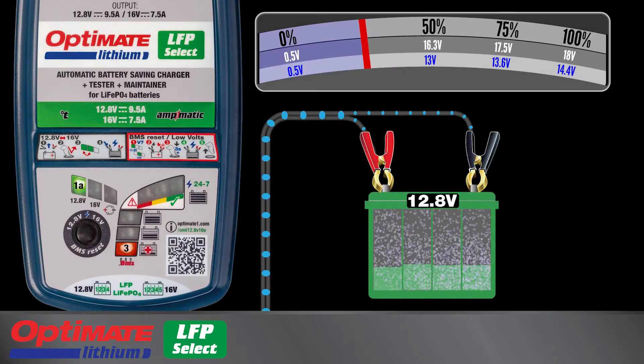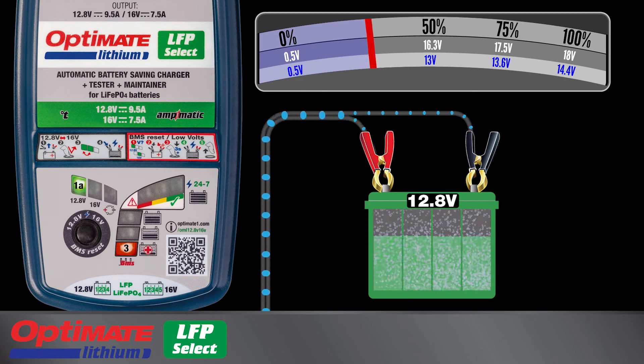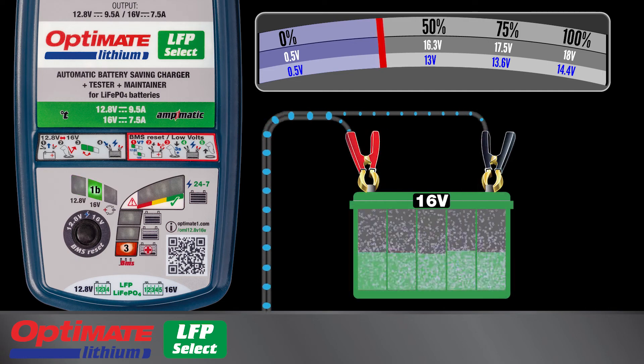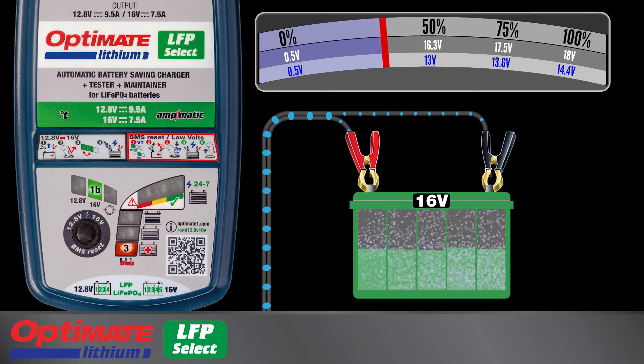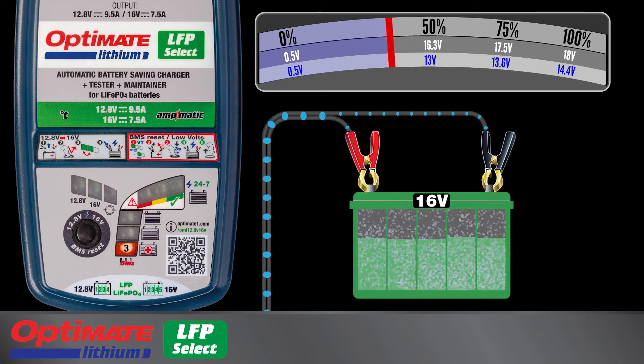Charging progresses automatically. Lamp 3 lights for a deep discharge 12.8 volt battery with a voltage of at least 0.5 volts, or for a discharge 16 volt battery with a voltage of at least 15 volts, up to a charge level of 50%.